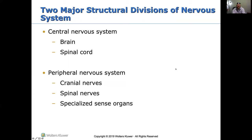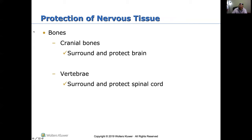There are two major divisions of the nervous system. The CNS — central nervous system — consists of the brain and spinal cord. The peripheral nervous system consists of cranial nerves, spinal nerves, and specialized sense organs. The nervous tissue is protected primarily by bone — cranial bones surround and protect the brain, and vertebrae surround and protect the spinal cord. Without those cranial bones, brain injuries would be very easy to sustain.